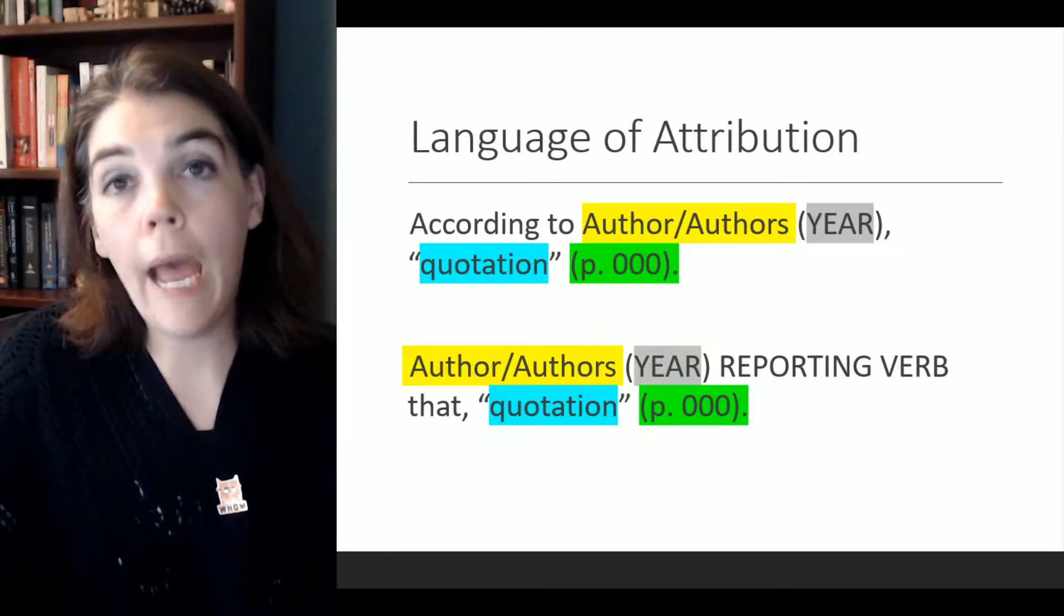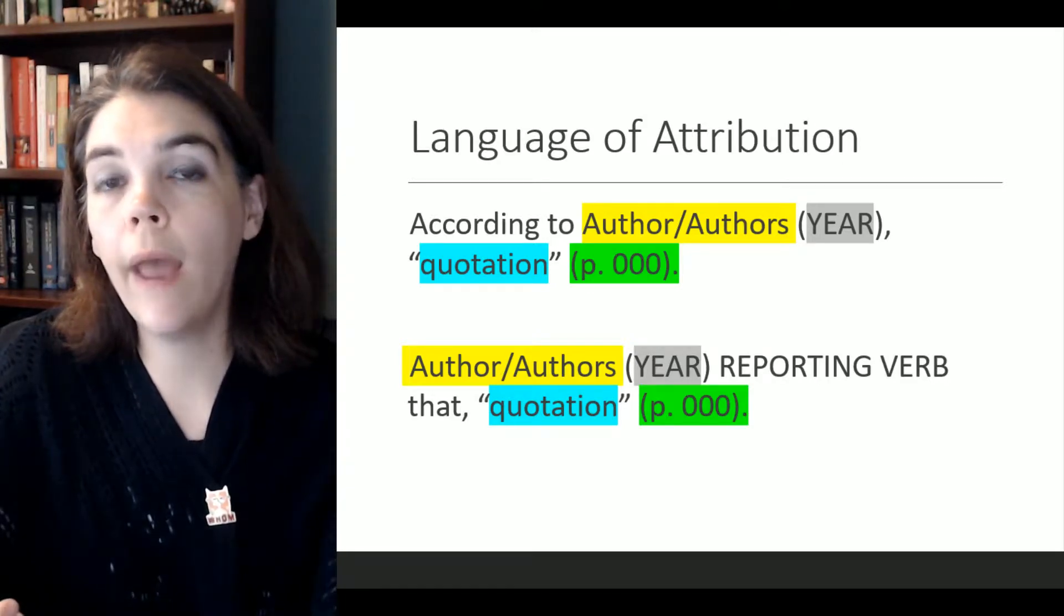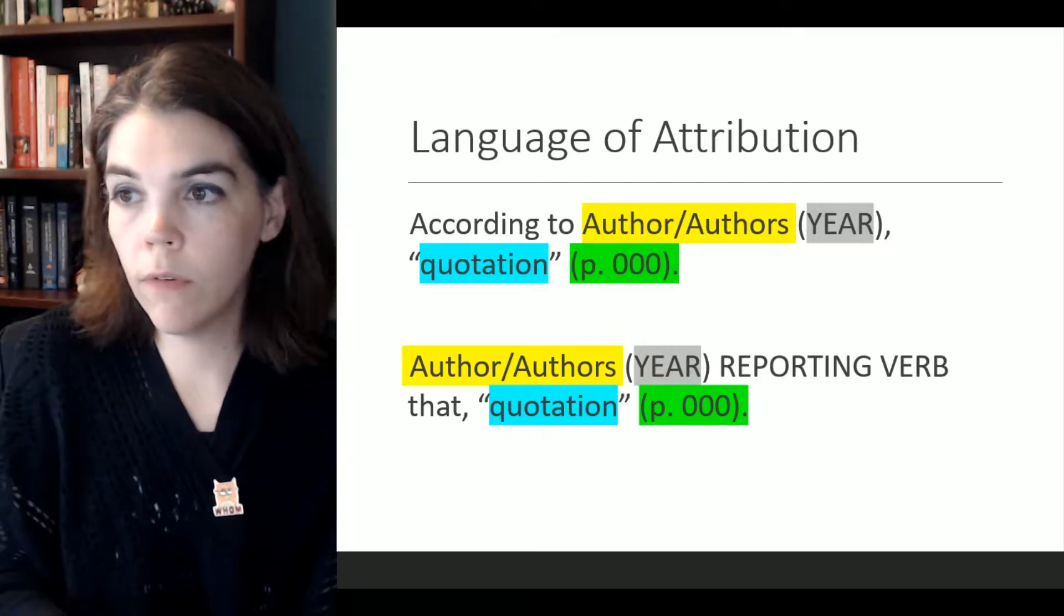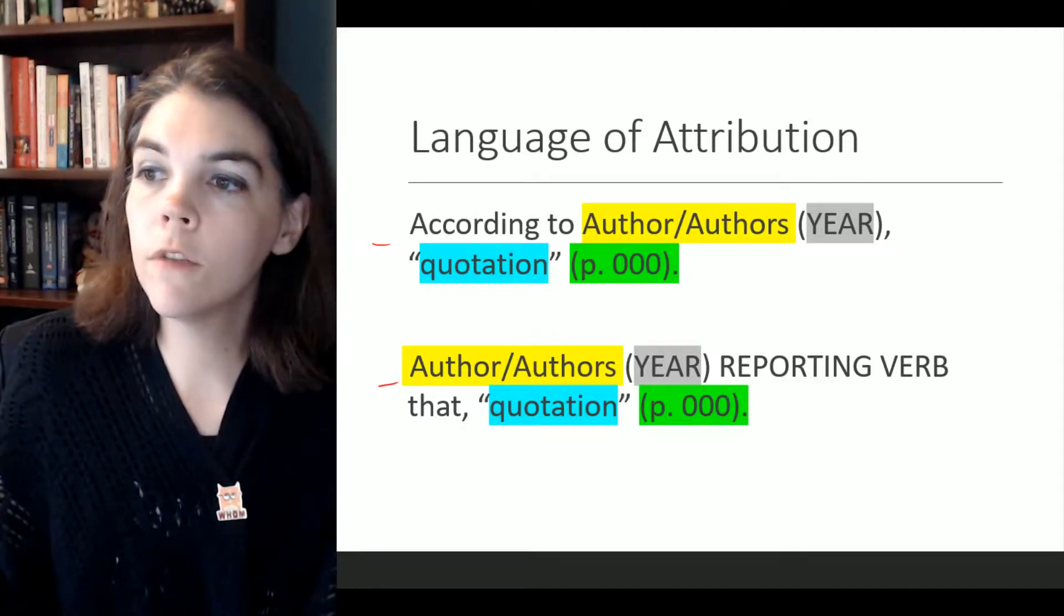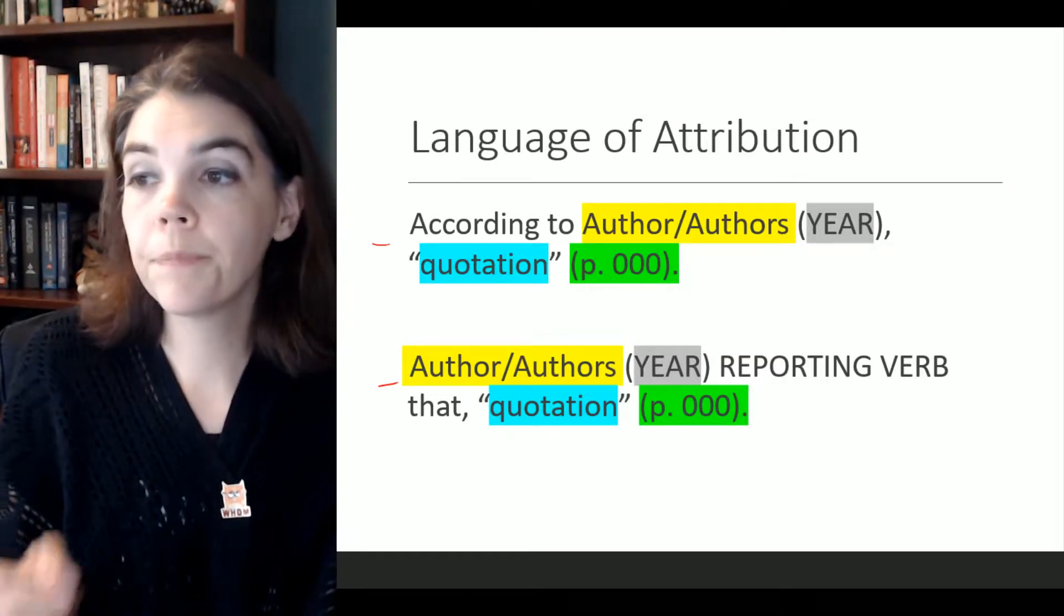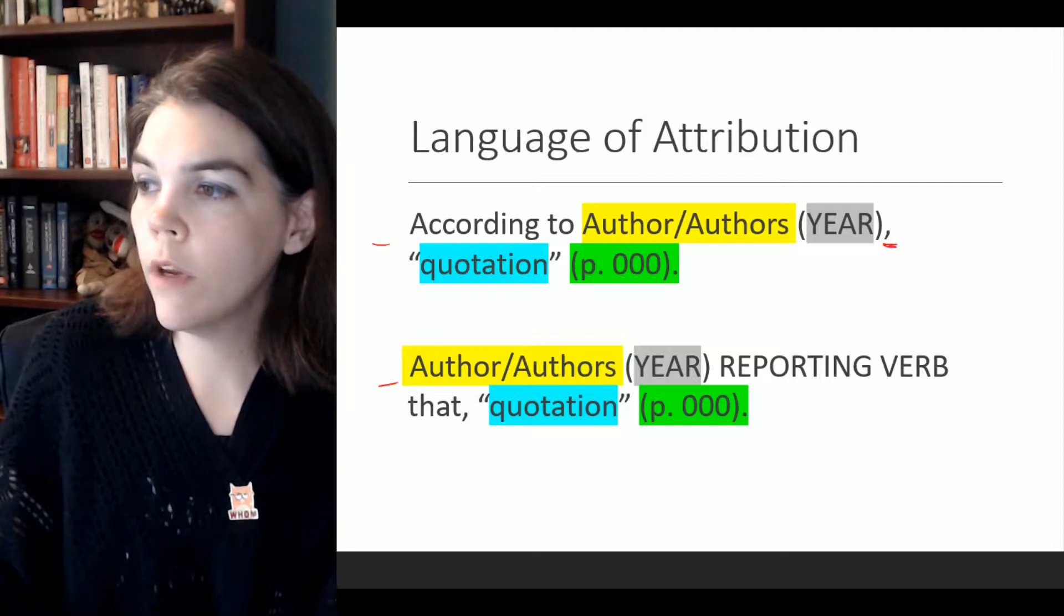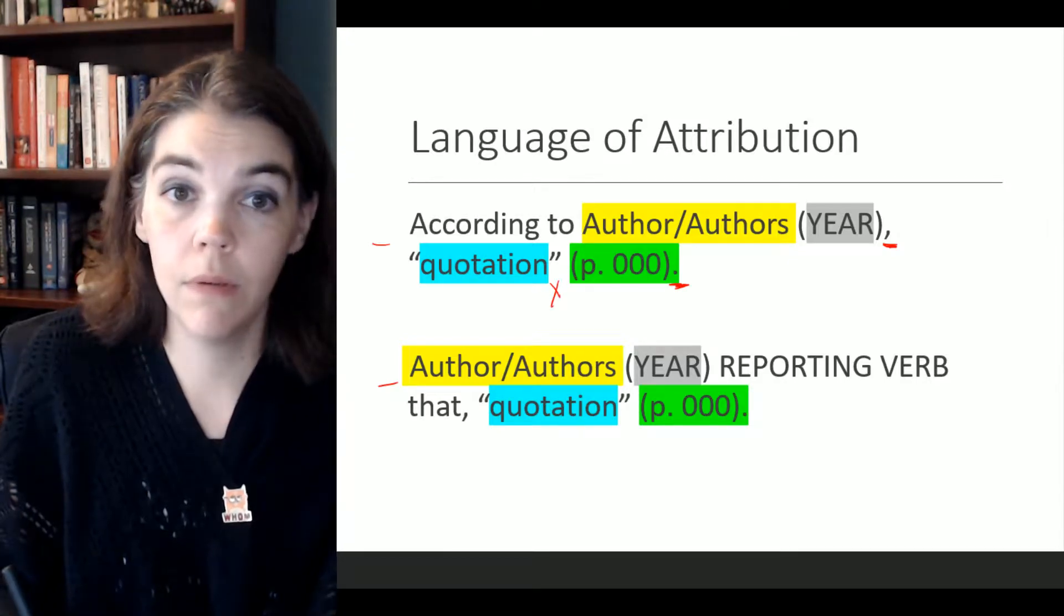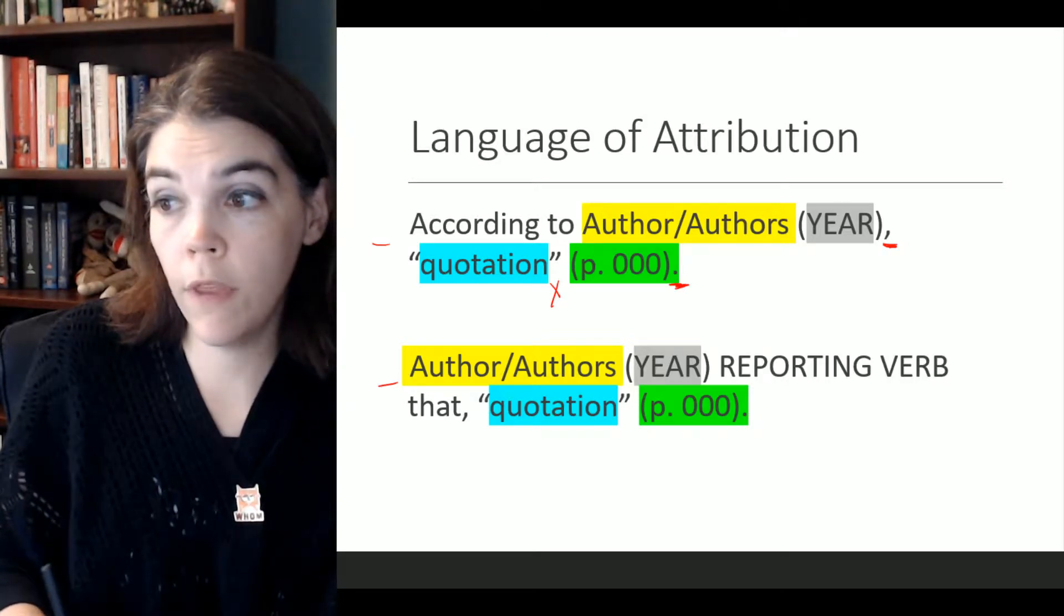We call this language of attribution and it's a way that we give credit to the people who had the ideas, who published the research. Here are two ways that we might see quotations being used. We might have according to author or authors, then the year, comma, then the quotation, and a page number. And just notice here where the comma is and the period goes outside of the page number. It does not go here.